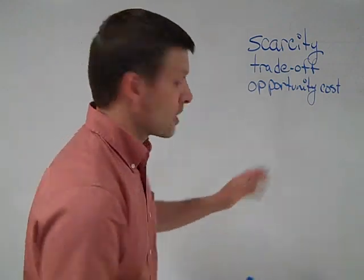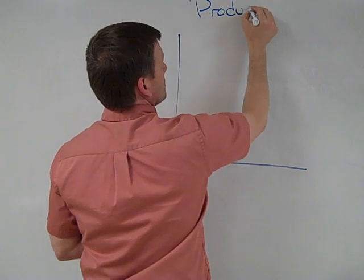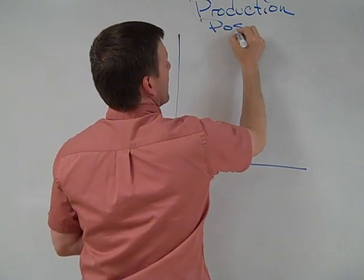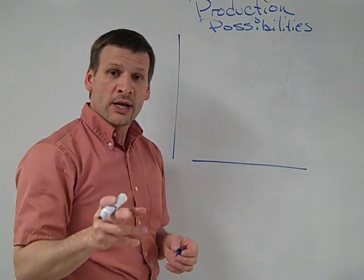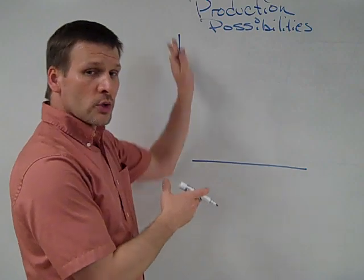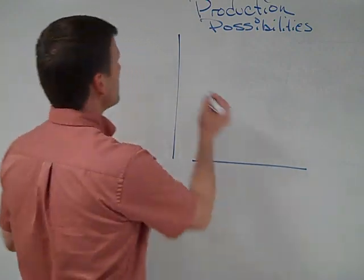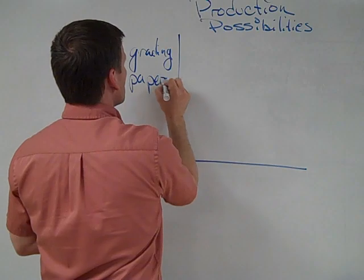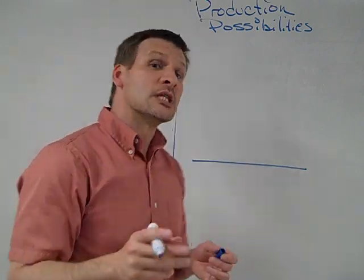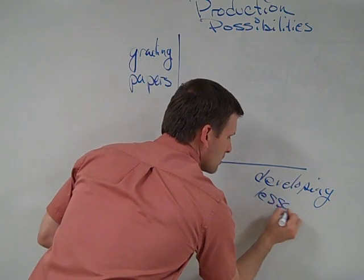I'm going to go ahead and draw one for you. I'm going to block this out. Vertical axis, horizontal axis, and again, the production possibilities to illustrate the concept of trade-offs. Here's how it's going to work. I'm going to put one choice on the vertical axis, the other choice on the horizontal axis. So I'm going to do a personal example. I'm going to assume that I have the choice of either grading papers or developing very interesting lessons.